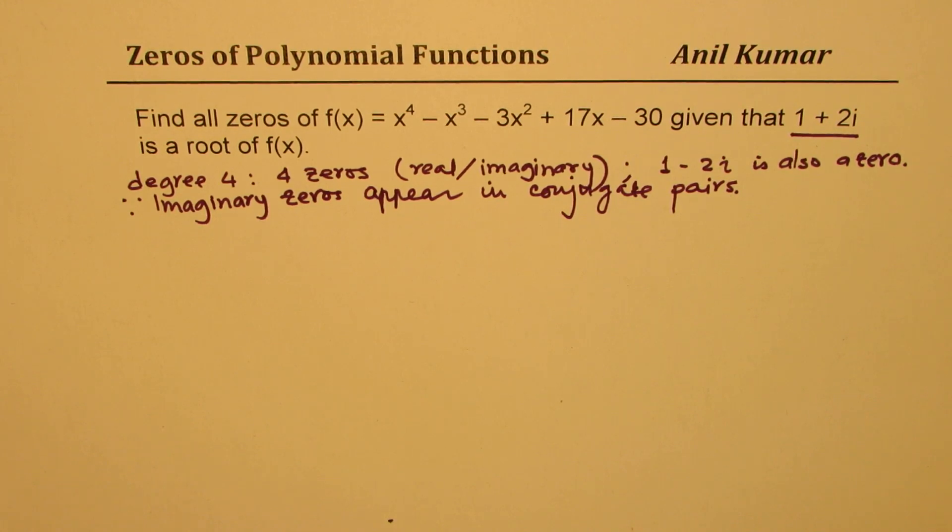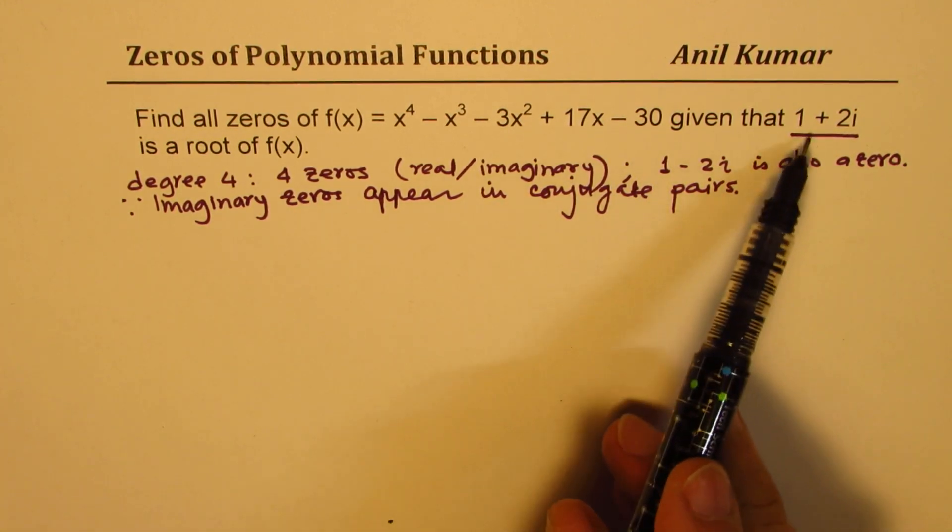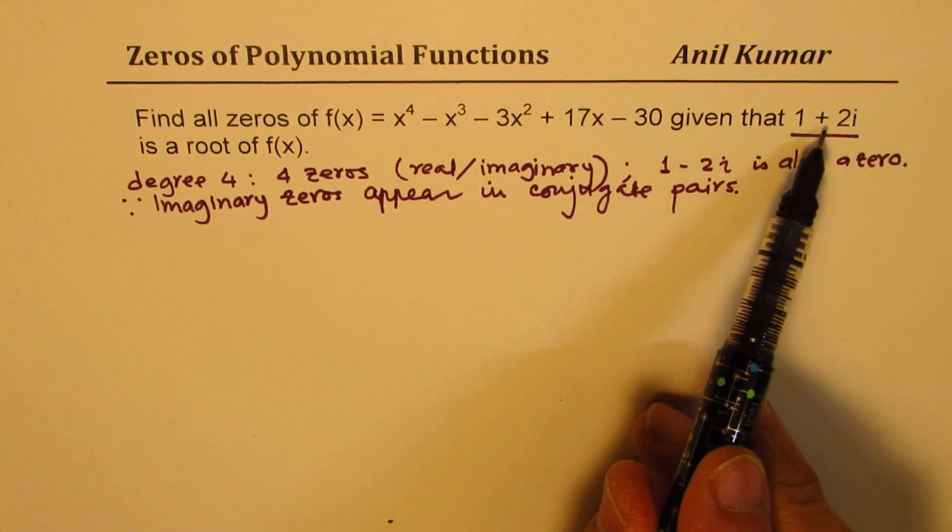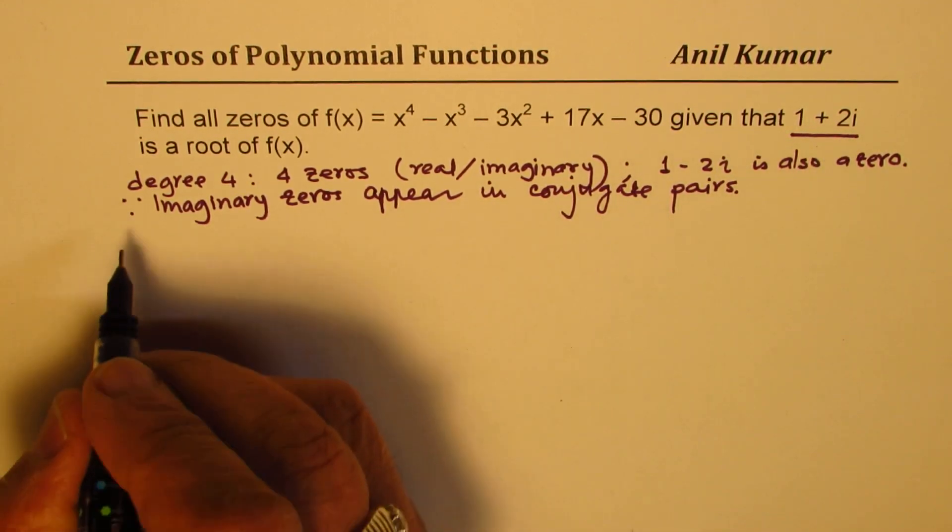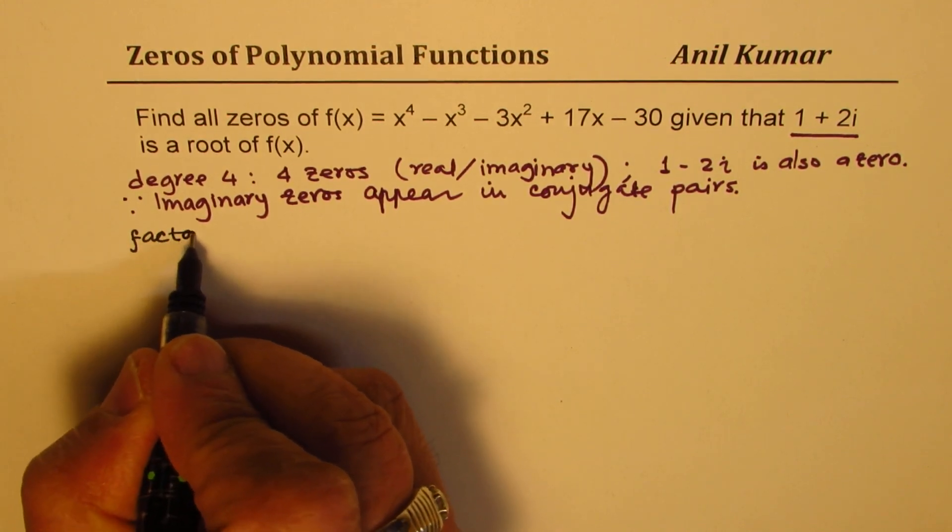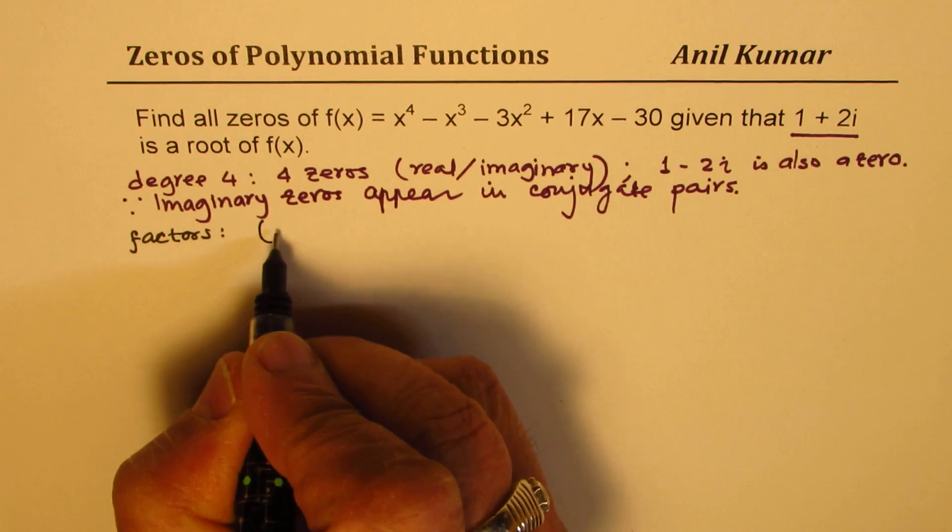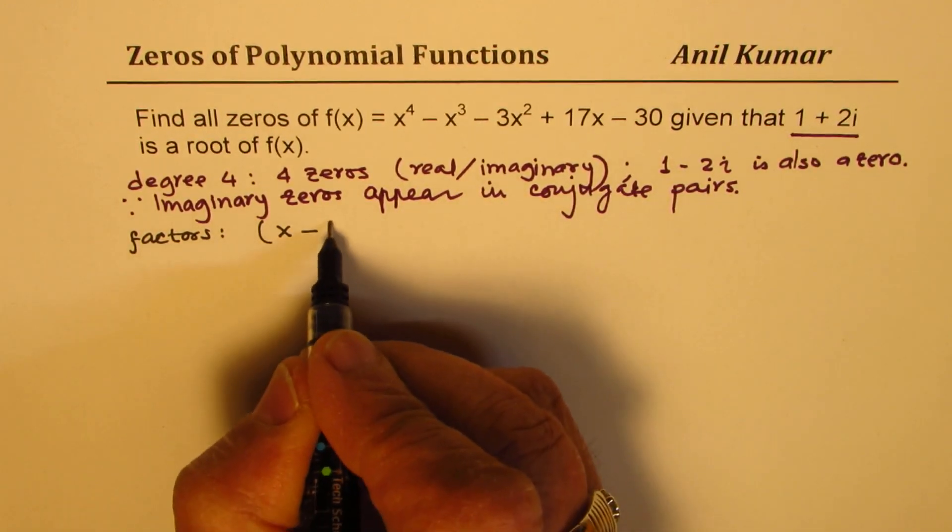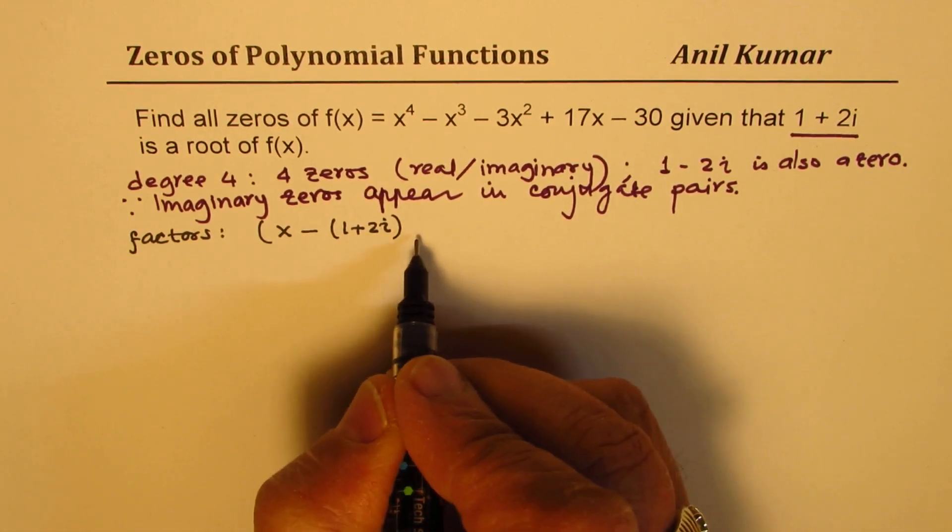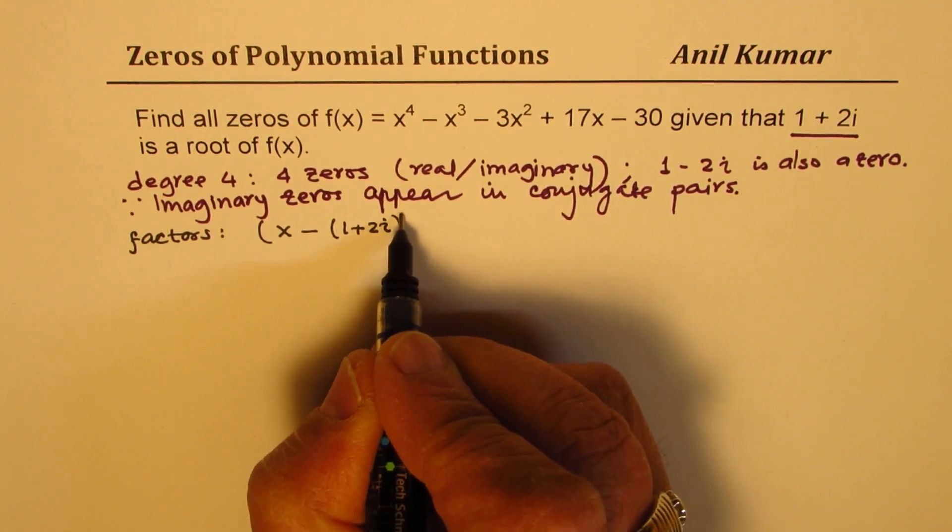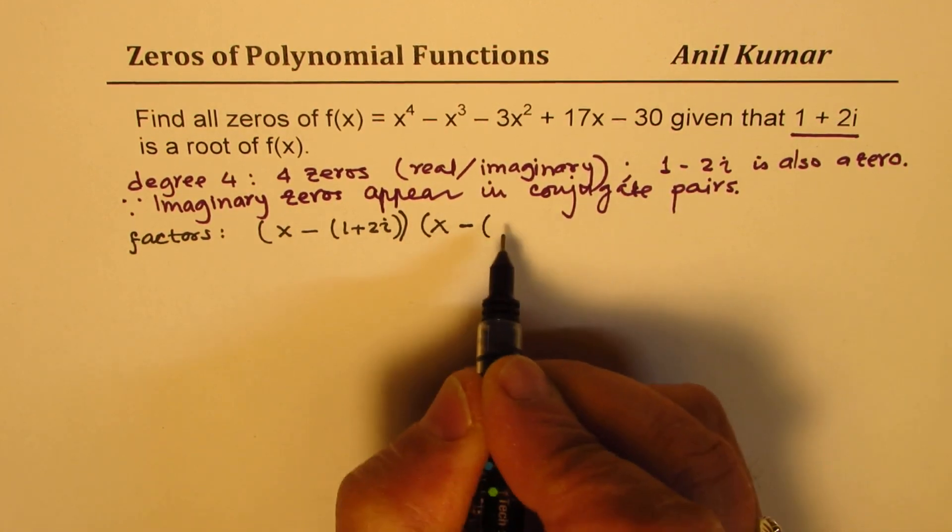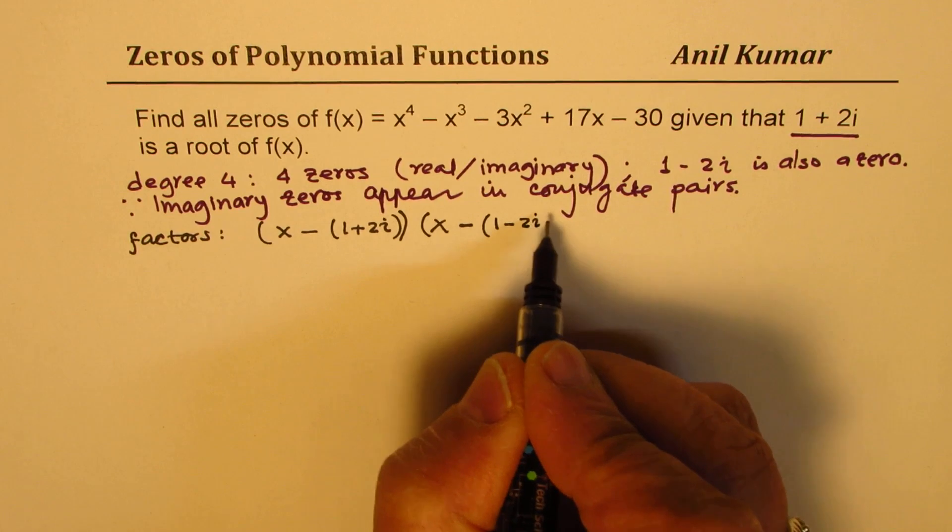Now, knowing that, we already know 2 out of 4 zeros, we need to find the other two. When we know 1 + 2i is a zero, what is a factor? That means the factors are (x - (1 + 2i)) and another factor is (x - (1 - 2i)), correct?